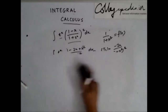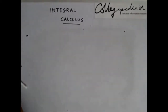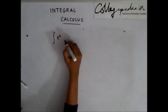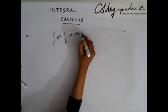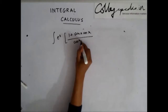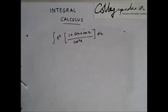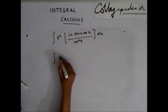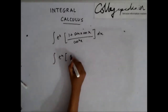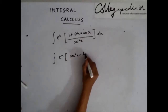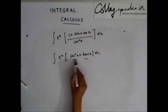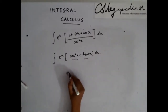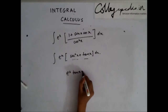Another example: integrate e^x times (1 + sinx·cosx) / cos²x dx. If you simplify this, you get sec²x plus tanx dx. Now if you take tanx as your f(x), you have f'(x) here. So the solution is e to the power x·tanx plus c.